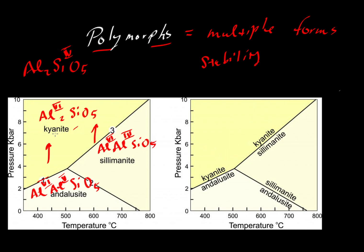We've shown here already, you can see by inspection, kyanite is the high-pressure polymorph, sillimanite is the high-temperature polymorph, and andalusite occupies this field at lower pressure and lower temperature.